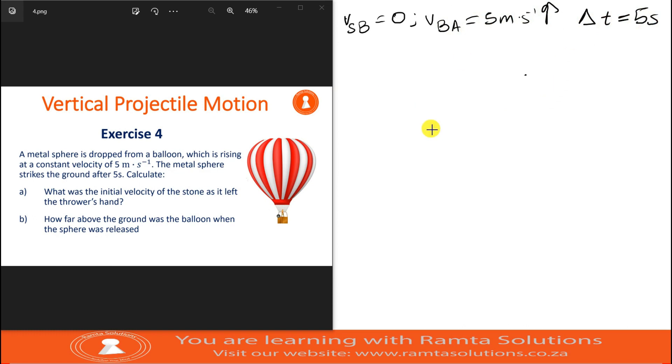They say what was the initial velocity of the stone as it left the thrower's hand? So this is where we're using relative velocity. I will say initial velocity is basically the velocity of the stone relative to the balloon plus velocity of the balloon relative to A. Remember, I have covered this relative velocity in the video on the use of relative velocity in projectile motion. You can check it out in the playlist of vertical projectile motion.